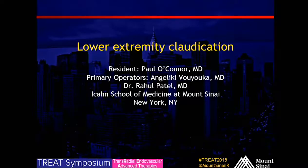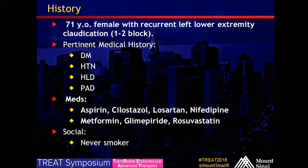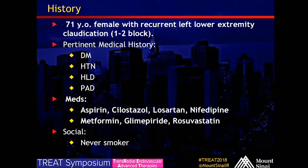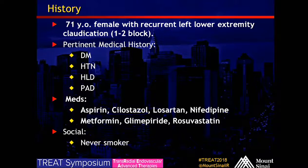Today we're doing a case for lower extremity claudication. This is a 71-year-old female with history of left lower extremity recurrent claudication, with symptoms after one to two blocks. Pertinent medical history includes diabetes, hypertension, hyperlipidemia, and PVD. She's on medications including aspirin and cilostazol. Never smoker.